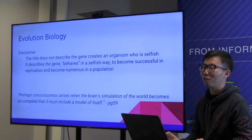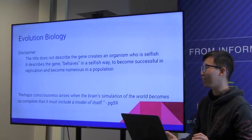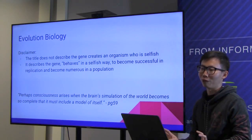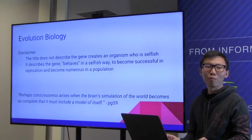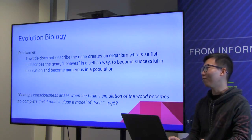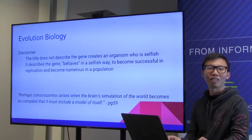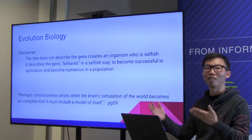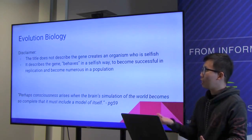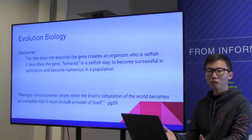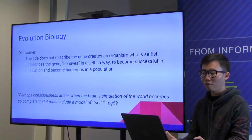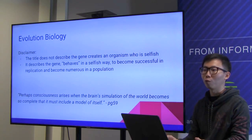The author himself repeatedly emphasized that he regrets using this title. He thinks 'The Immortal Gene' would be more suitable. The title 'The Selfish Gene' makes everyone think it refers to a gene that creates a selfish organism, but that's not his intent. He wants to discuss how a gene behaves in a selfish way so that it can survive, replicate, and become numerous in the population.